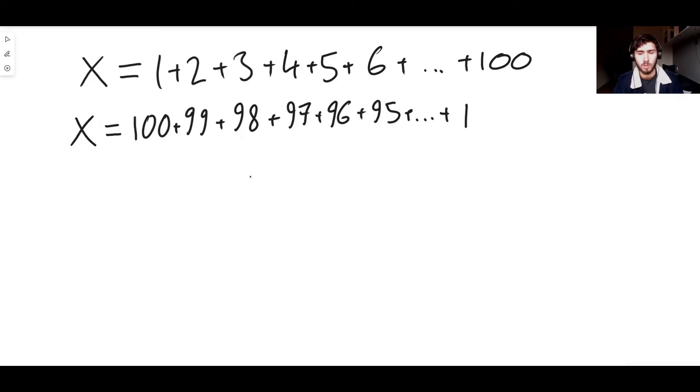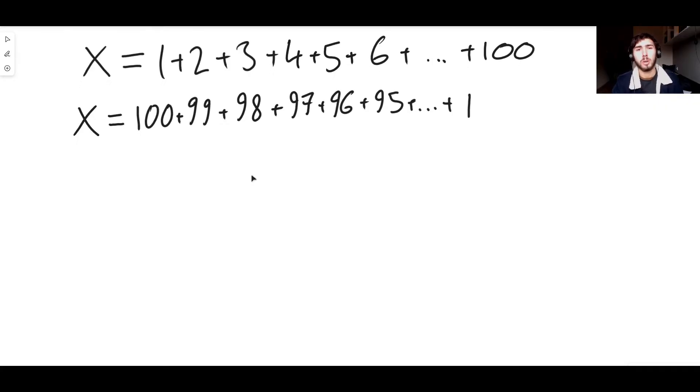These two definitions of x will give you the exact same answer. All we've done for this second definition of x is we've rewritten the sum the other way around. But we know that when you add things up, it doesn't matter which order you add things. If you add 100 plus 99 plus 98, you're going to get the same answer as if you add 1 plus 2 plus 3 up to 100, because addition is commutative.